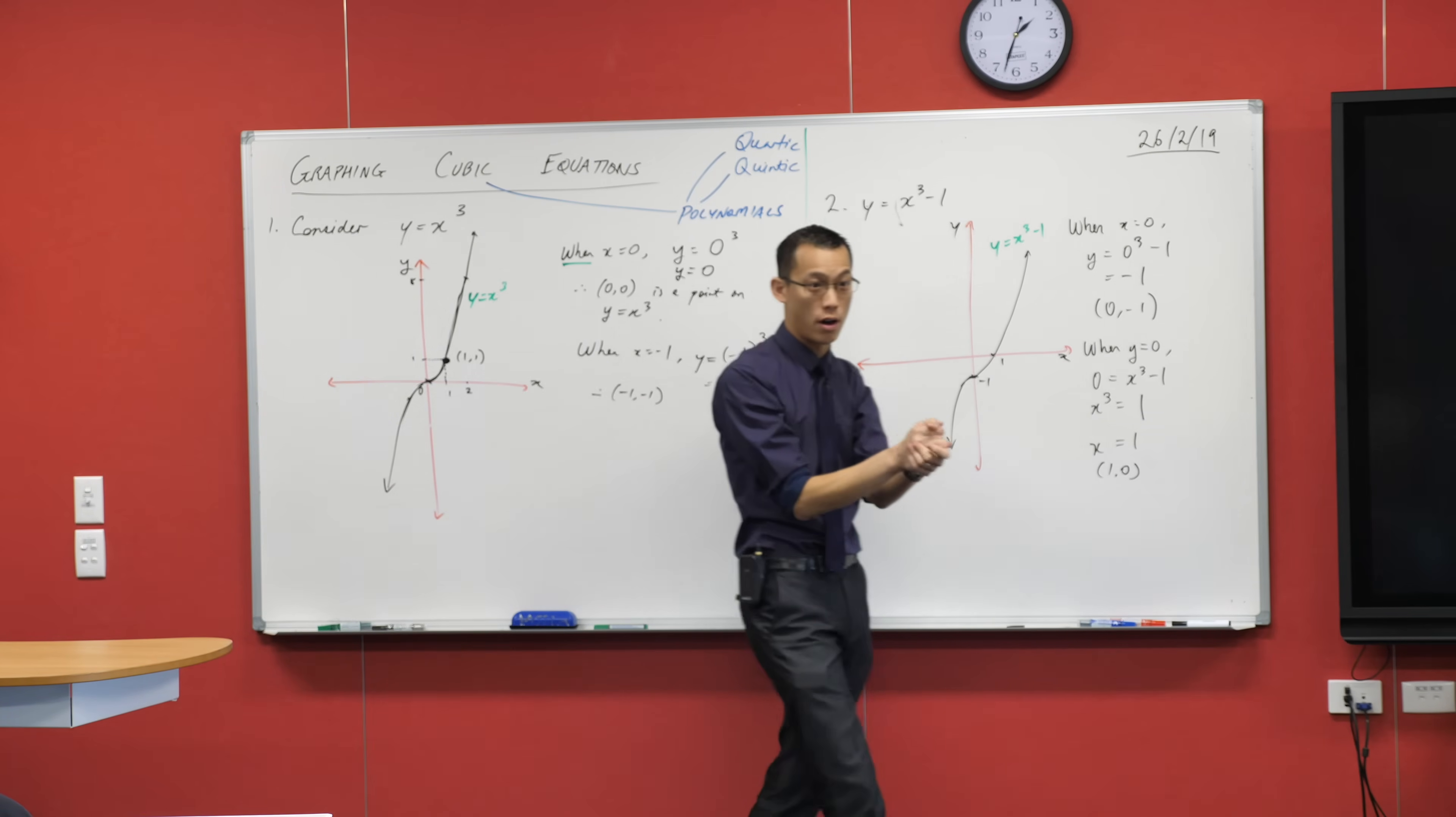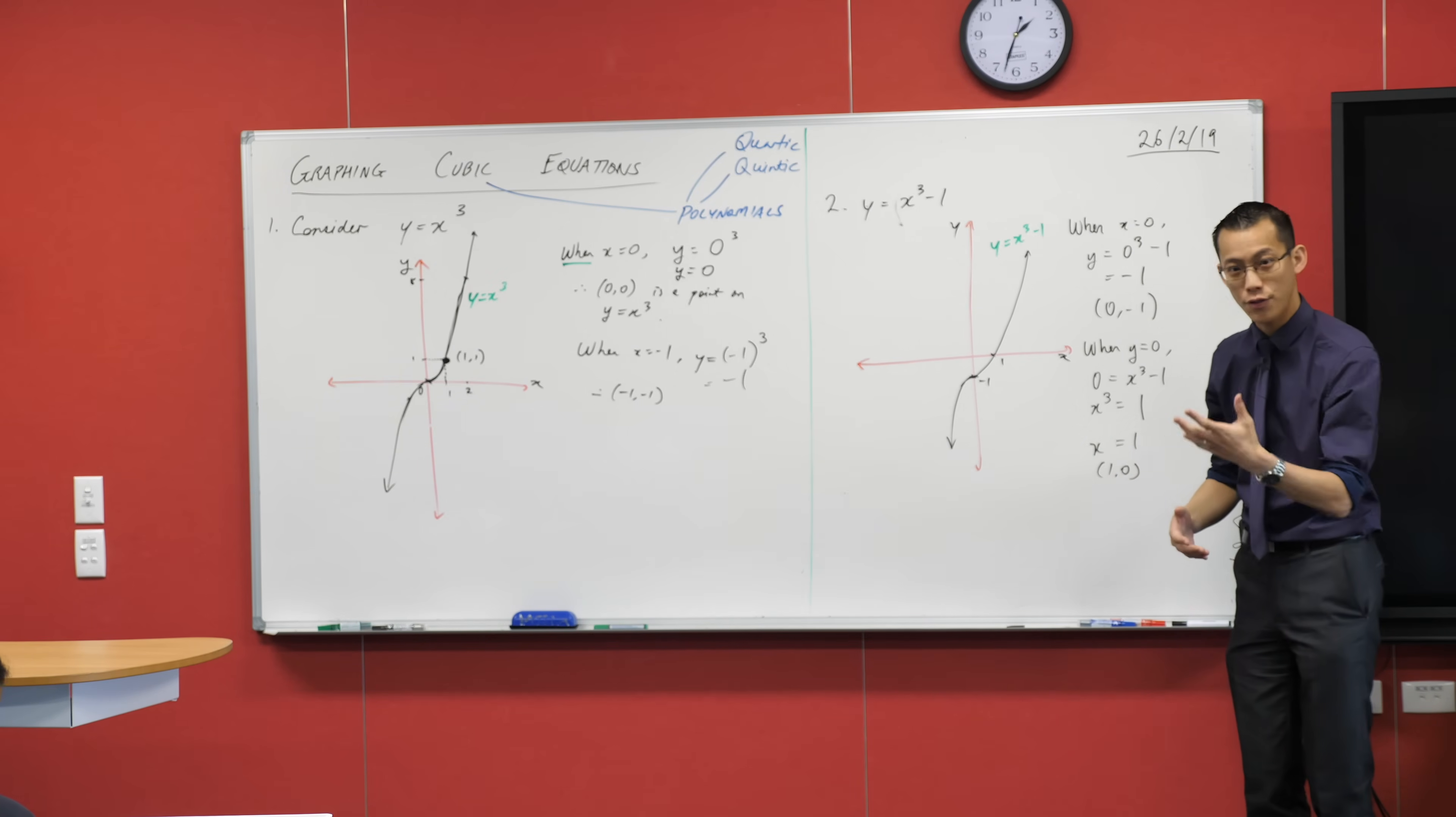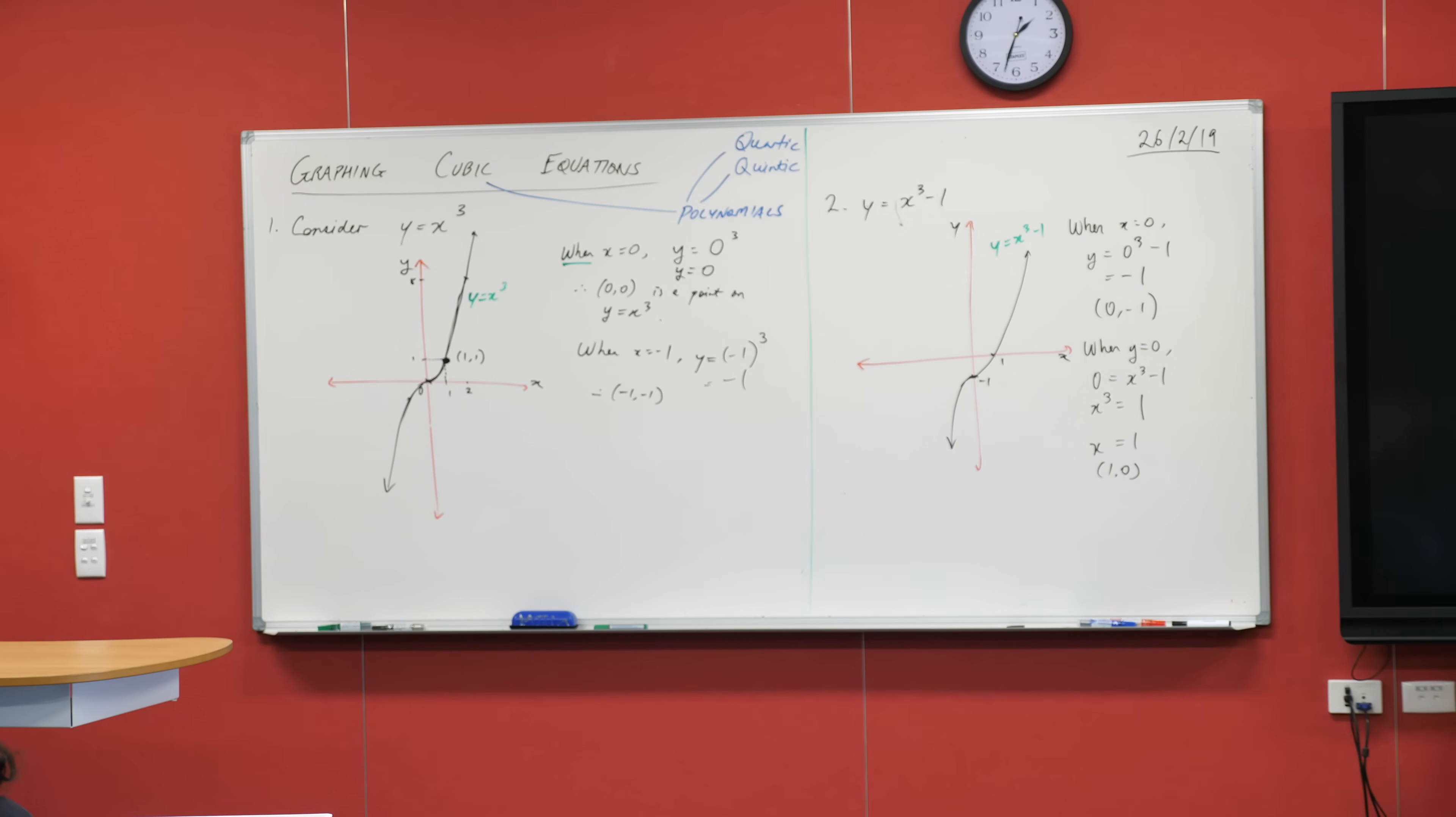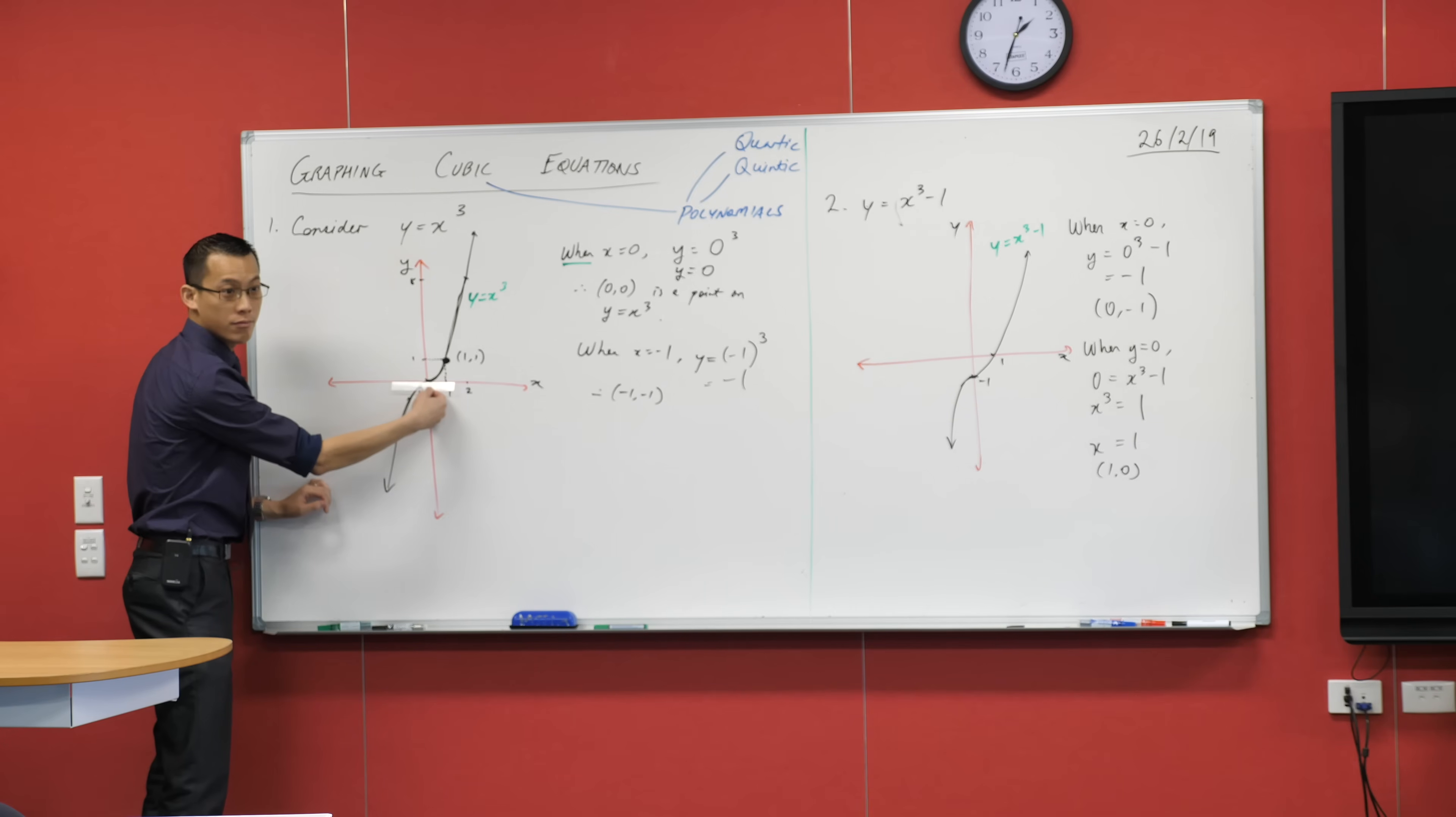Now you might notice there's this special spot on both of these graphs where the gradient is not just shallow. If you take your ruler, which I don't have, I'm going to pinch your ruler Alex, may I? Thank you. If you take your ruler, and you place it right across that spot there.